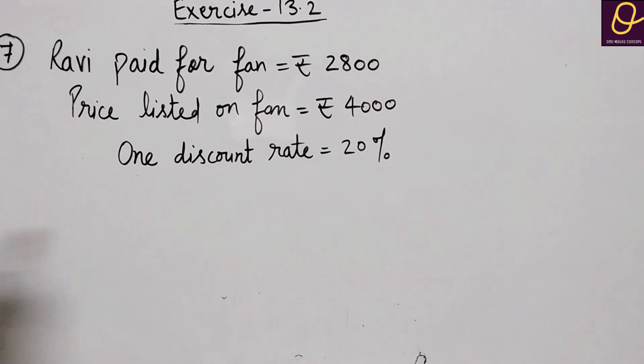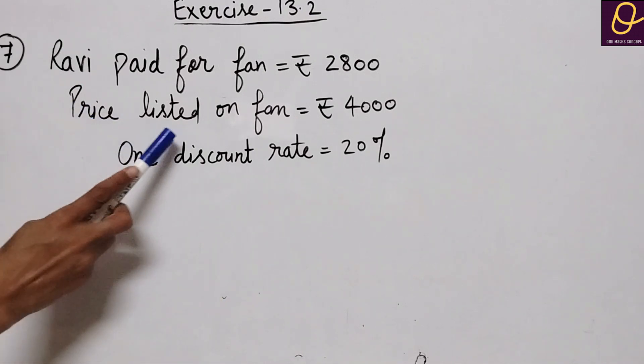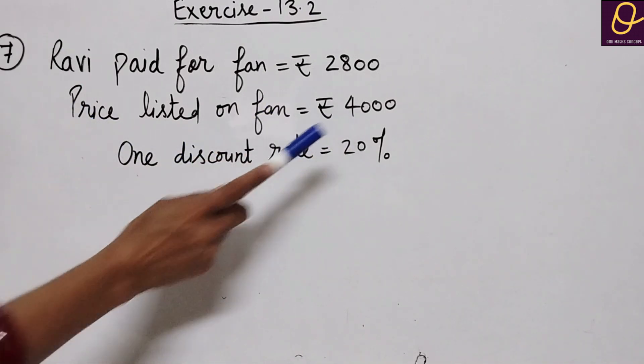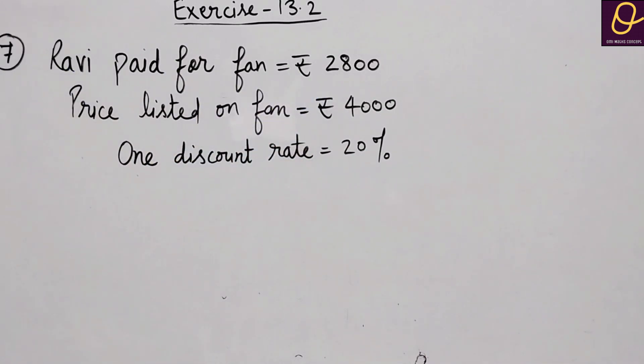The first discount rate is 20% and the listed price means the market price is 4000. And Ravi has paid 2,800.